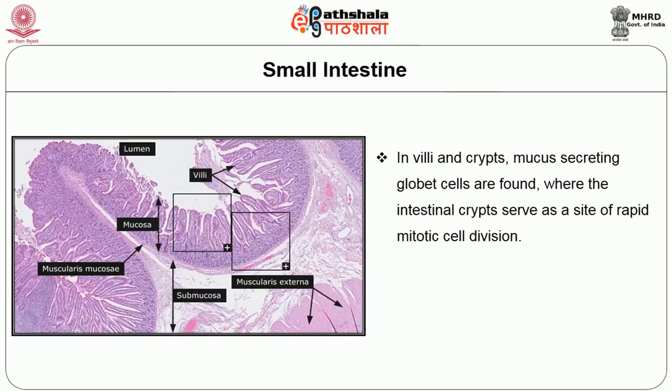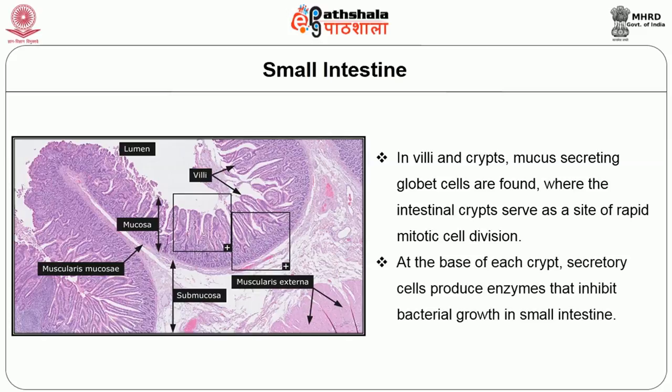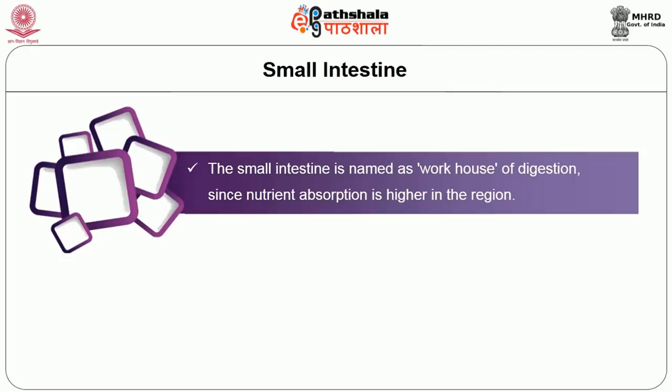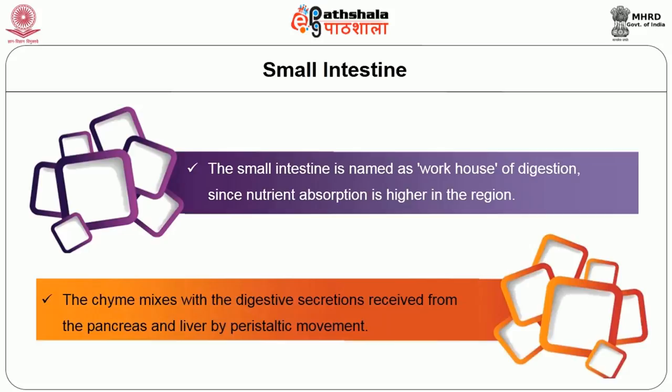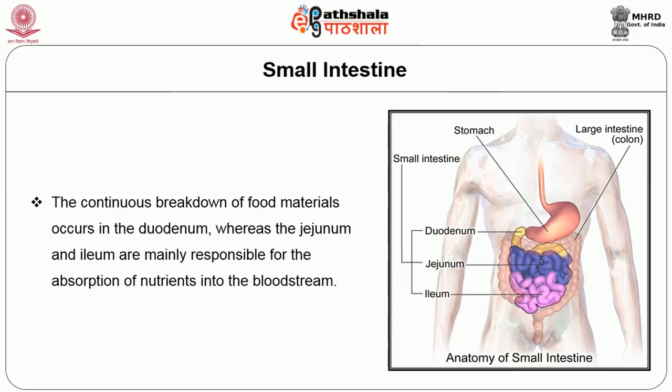In the villi and crypts, mucus-secreting goblet cells are found, where the intestinal crypts serve as a site of rapid mitotic cell division. At the base of each crypt, secretory cells produce enzymes that inhibit bacterial growth in the small intestine. The small intestine is named the workhouse of digestion since nutrient absorption is highest in this region. Chyme mixes with the digestive secretions received from the pancreas and liver by peristaltic movement. Continuous breakdown of food material occurs in the duodenum, whereas the jejunum and ileum are mainly responsible for the absorption of nutrients into the bloodstream.